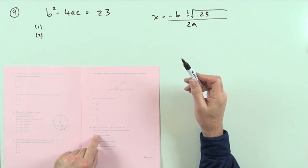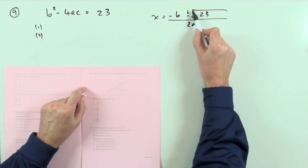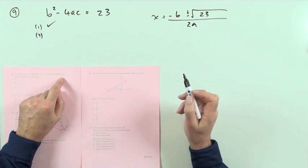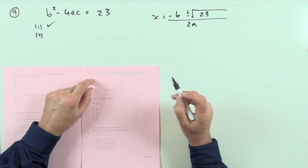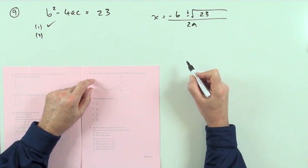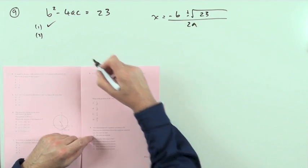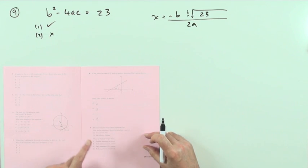The first part is, one, the roots are real. Yes, you can get the square root of 23. So yes, the roots are real. Second part, the roots are rational. They'll only be rational if that's a perfect square. 23 is not a perfect square. So the roots are rational, no. And then you look for the selection that says one only, which is B.